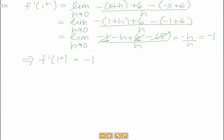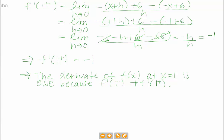This is a preview for our next chapter. We can then say that this implies that the derivative of f of x at x equals 1 is DNE, because f prime of 1 from the right doesn't equal f prime of 1 from the left.